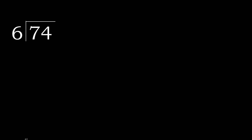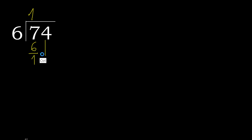74 divided by 6. 7 is not less, so we work with 7. 6 multiplied by which number is nearest to 7 but not greater? 6 multiplied by 2 is 12, which is greater. Multiplied by 1 is 6, which is not greater. 7 minus 6 is 1.